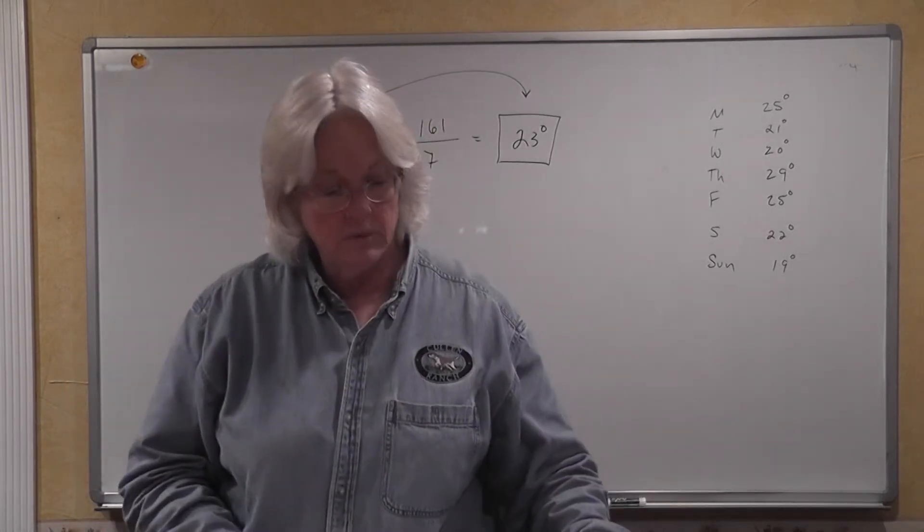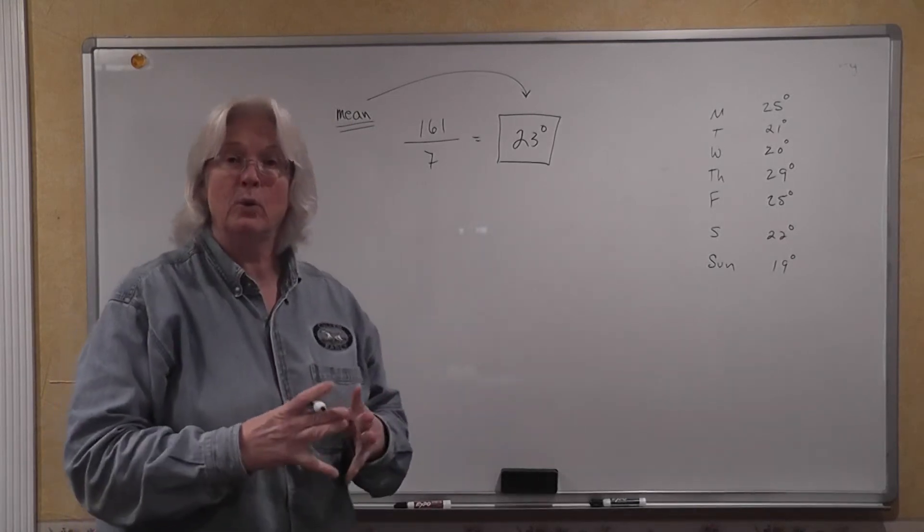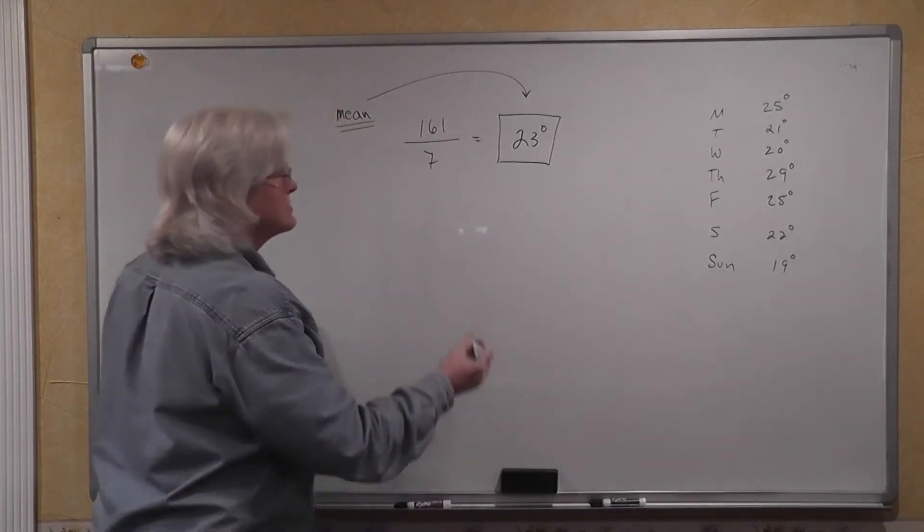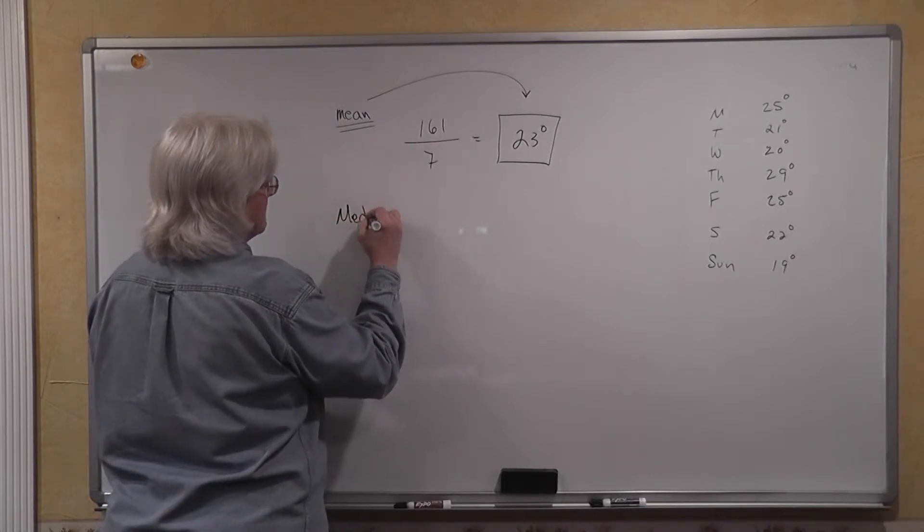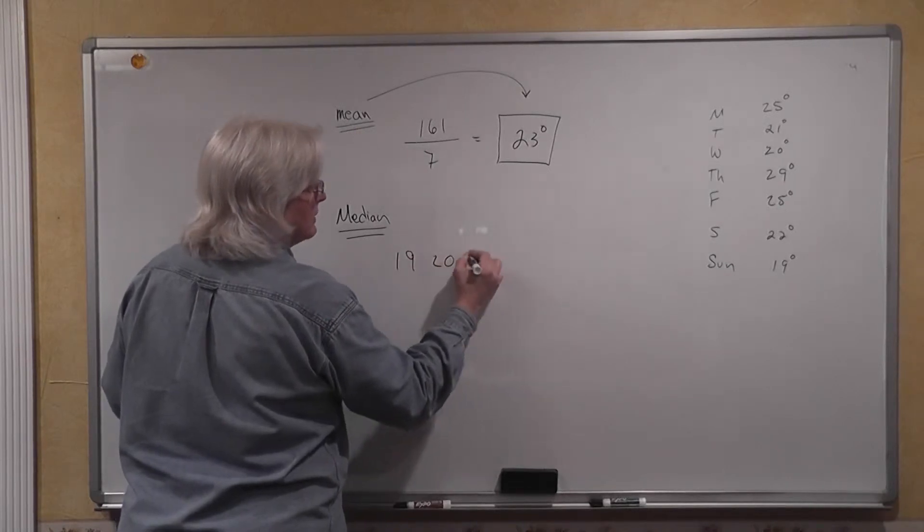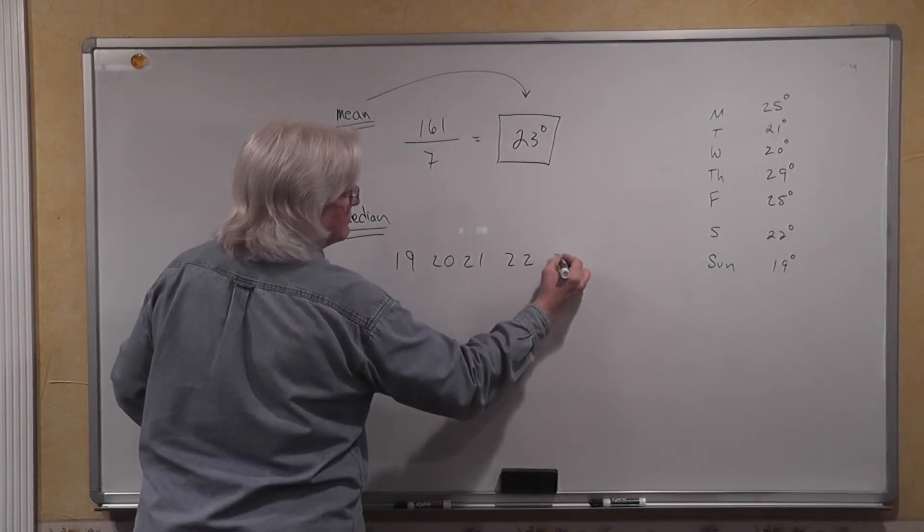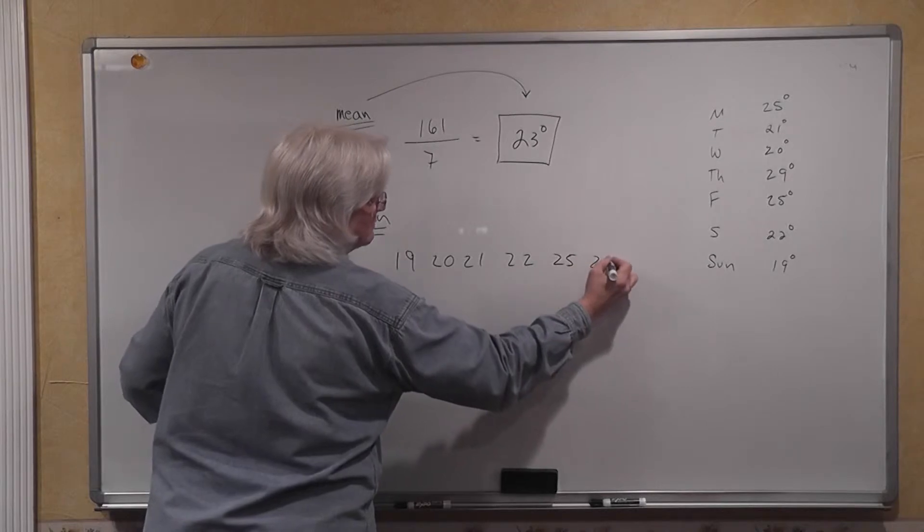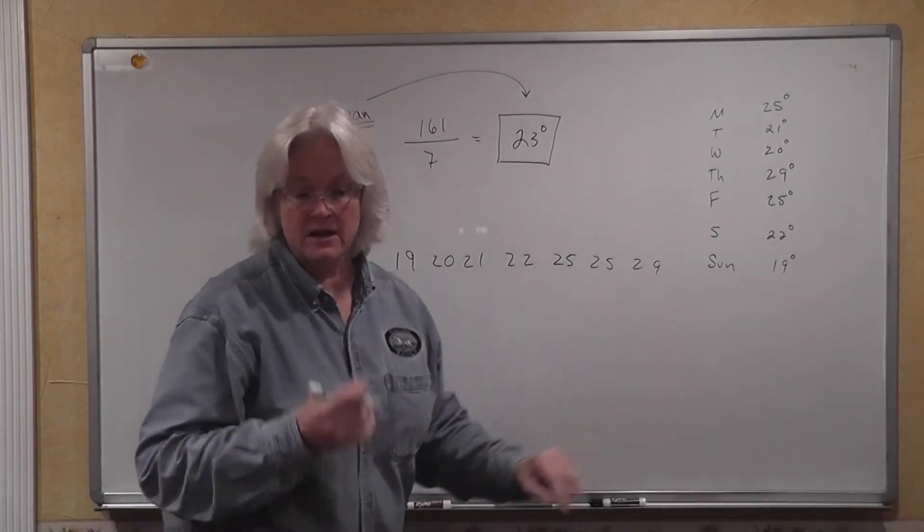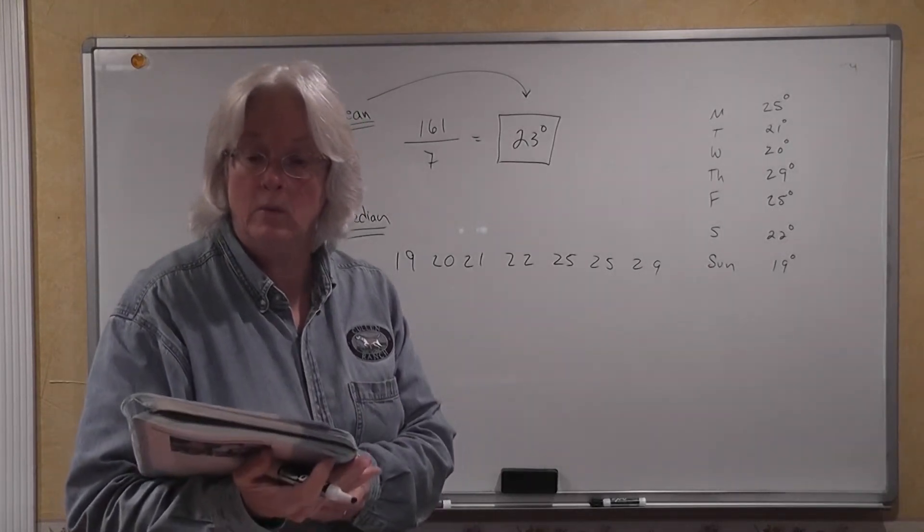Now we wanted to be able to find the median. In order to find the median, we have to arrange this data in ascending order. So we have median. We begin with 19, 20, 21, 22, 25, 25, and 29. Hopefully I've got seven numbers. So I have seven numbers and I'm going to go ahead and determine what the median is.